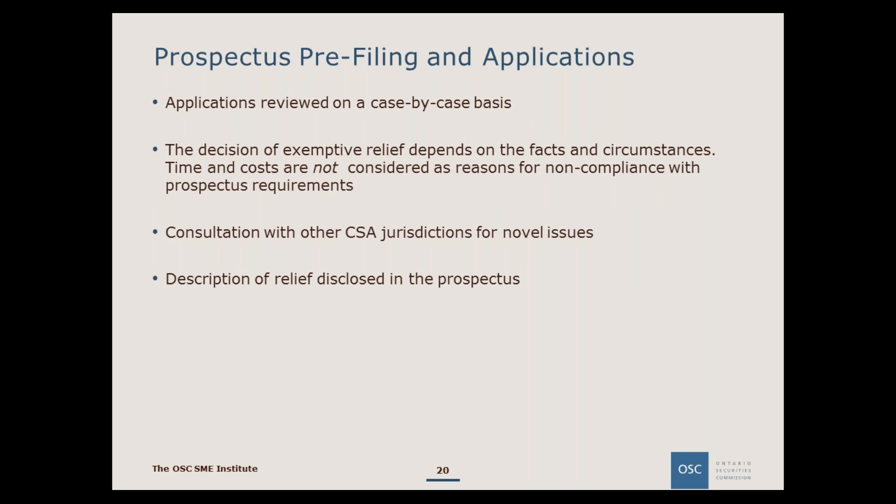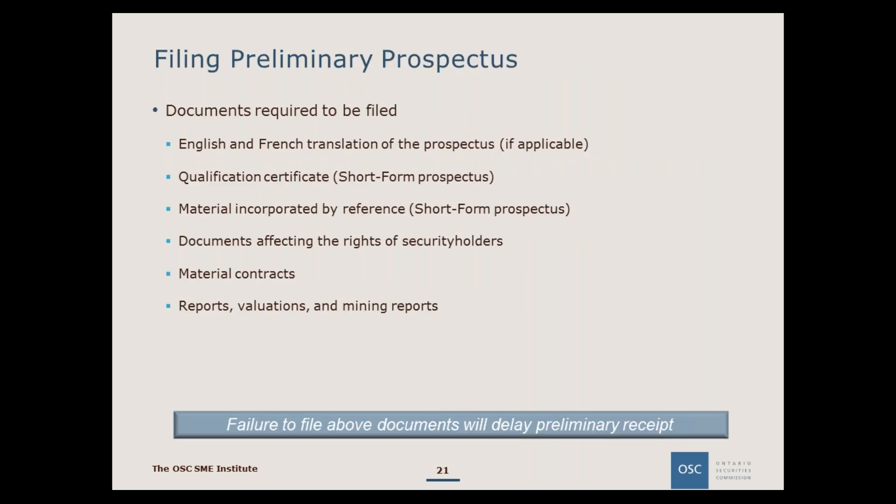Pre-filings and applications are reviewed on a case-by-case basis. We generally do not consider time and cost as reasons for non-compliance with prospectus requirements. We consult with other CSA jurisdictions on novel issues, which is another reason why any novel aspect should be pre-filed. In the event that relief is granted, we would expect a description of the relief to be disclosed in the prospectus. It is important to properly file all applicable documents, including English and French translation of the prospectus if applicable, qualification certificates, materials incorporated by reference, documents affecting rights of security holders, material contracts, reports, valuations, and mining reports.